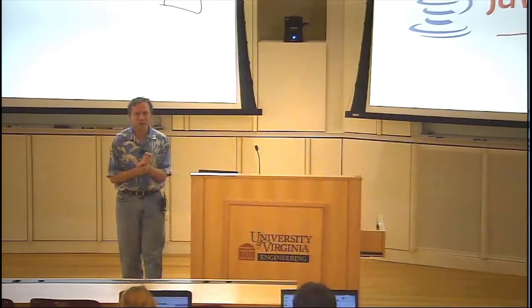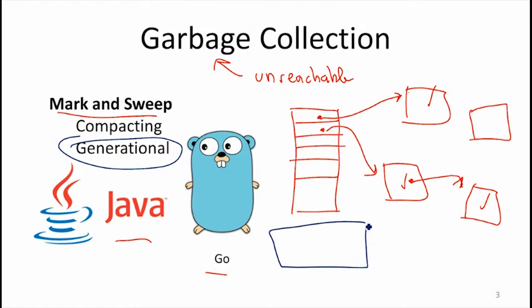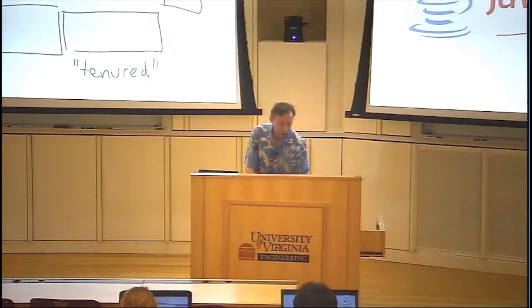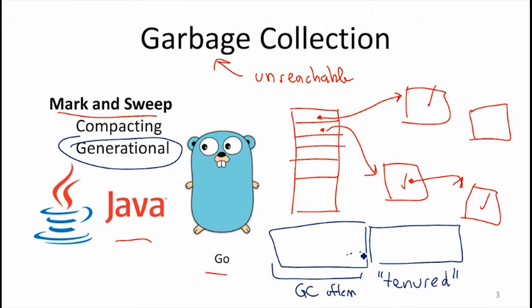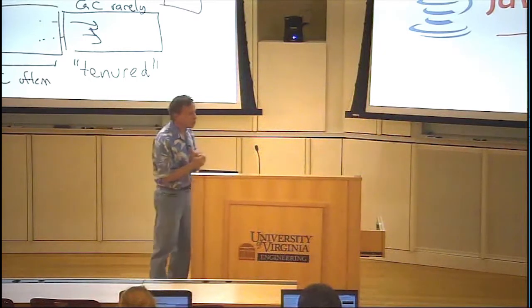Generational garbage collectors assume that if an object survives garbage collection a few times, it probably has a long lifetime and you don't need to keep checking if it's garbage. So the collector divides storage into a few areas — sometimes called 'tenured.' Once an object has passed garbage collection a few times, it moves into the tenured part of memory, which doesn't get garbage collected very often. Unlike tenured professors, you still get to garbage collect tenured objects — they don't stay around forever — but you don't collect them very often.